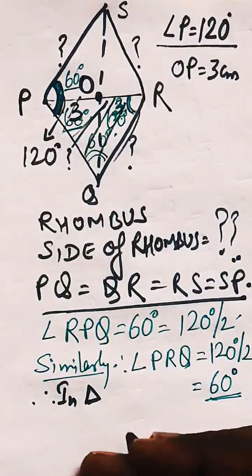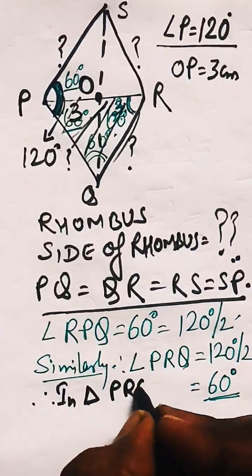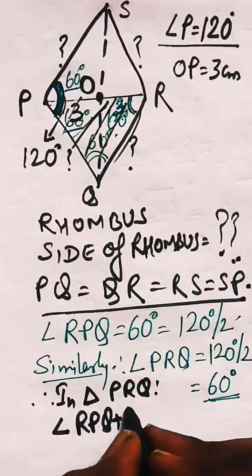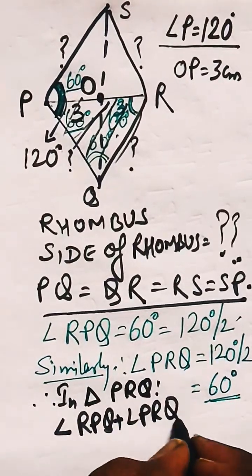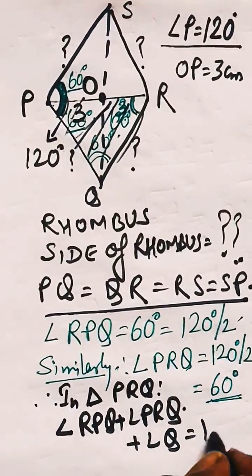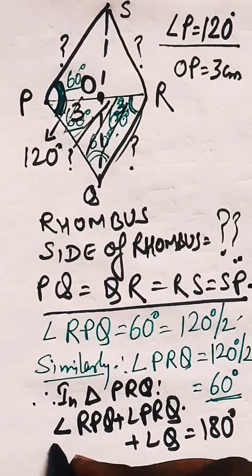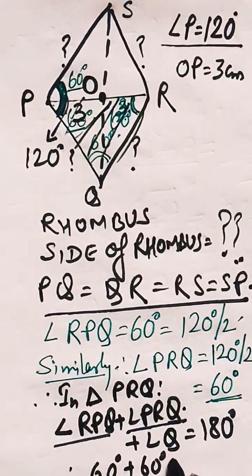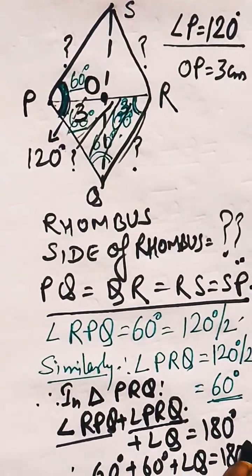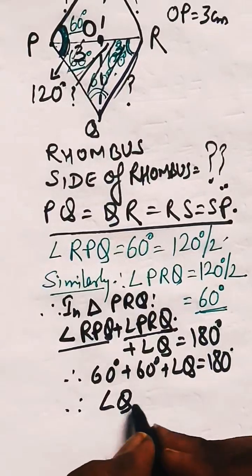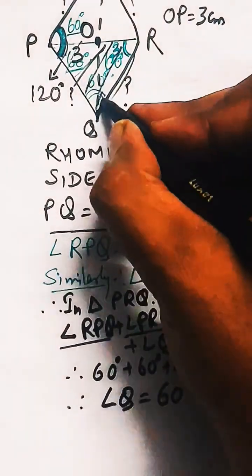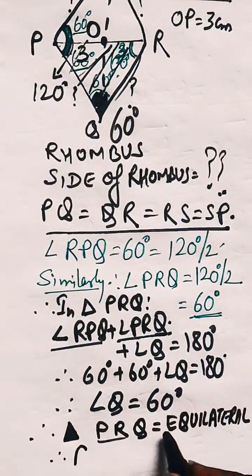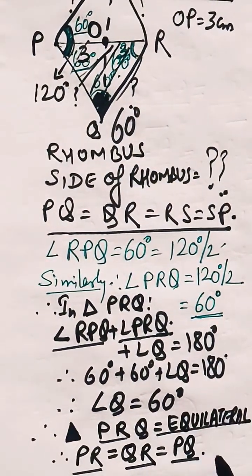Triangle PRQ is declared equilateral. Writing this out: angle RPQ plus angle PRQ plus angle Q equals 180 degrees. Putting in the values of 60 and 60 for RPQ and PRQ, we get angle Q equal to 60 degrees. With all three angles equal to 60 degrees, triangle PRQ is proven equilateral. Since the diagonals of a rhombus bisect each other equally, the length of OP is given as 3 centimeters.